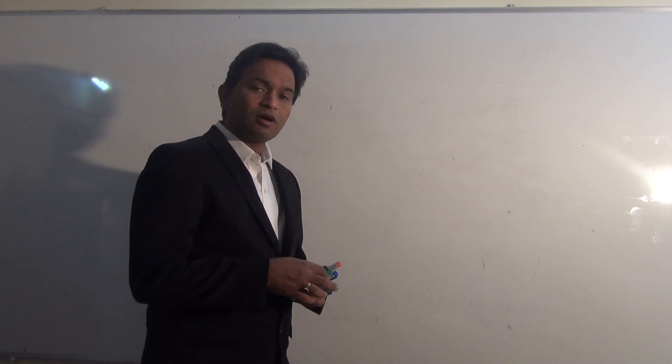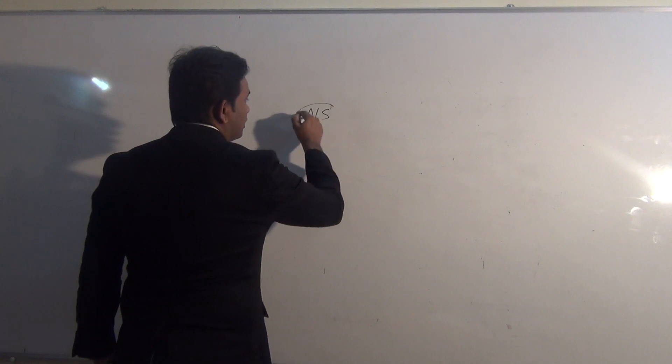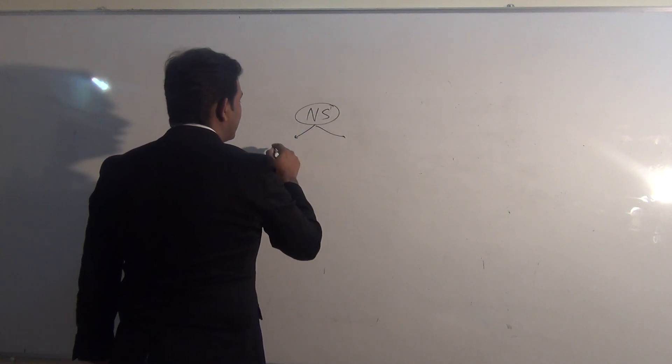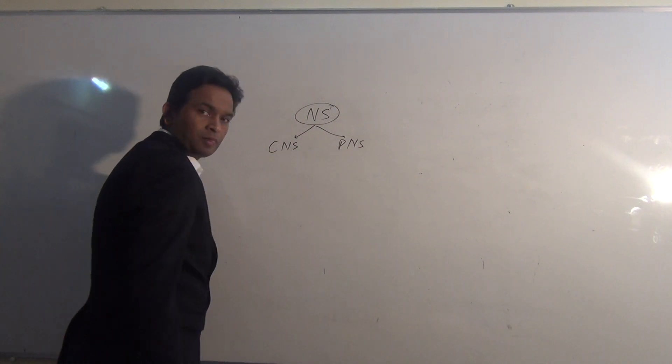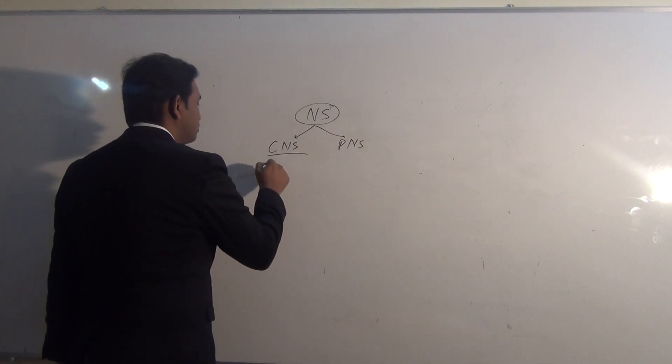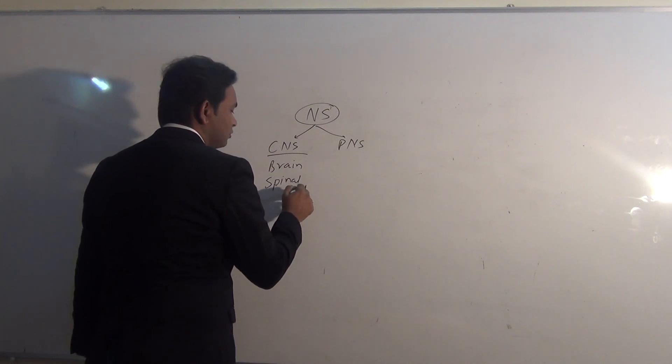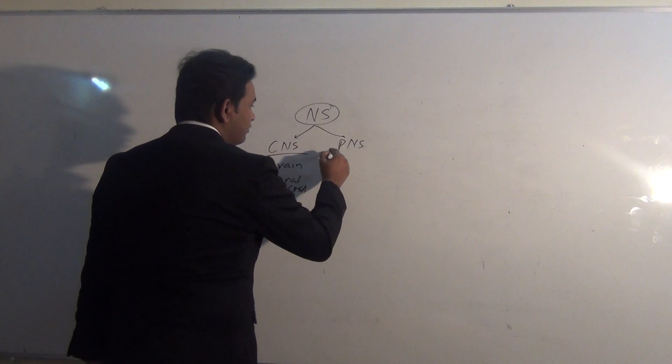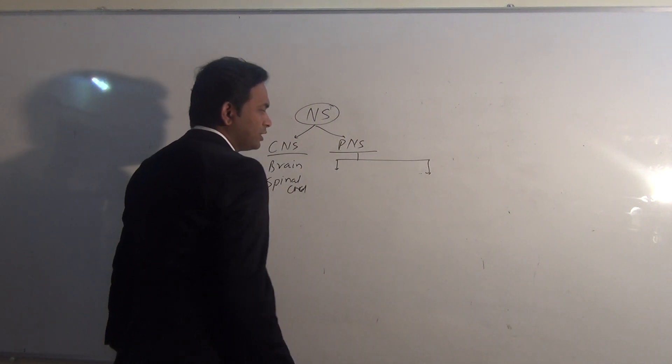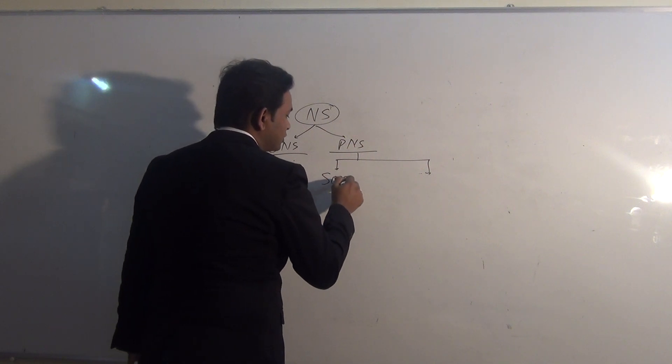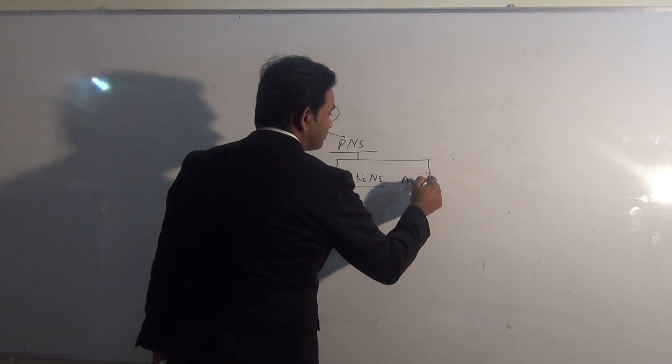Now we will discuss the divisions of nervous system. The nervous system can be divided into central nervous system and the peripheral nervous system. Central nervous system includes brain and spinal cord, while the peripheral nervous system is again divided into two components: somatic nervous system and the autonomic nervous system.